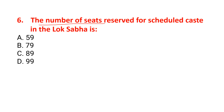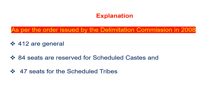The number of seats reserved for Scheduled Caste in the Lok Sabha is: options are 59, 79, 89, or 99. The correct option is 79. As per the order issued by the Delimitation Commission in 2008, 412 seats are for general, 84 seats are reserved for Scheduled Caste, and 47 seats are reserved for Scheduled Tribes.